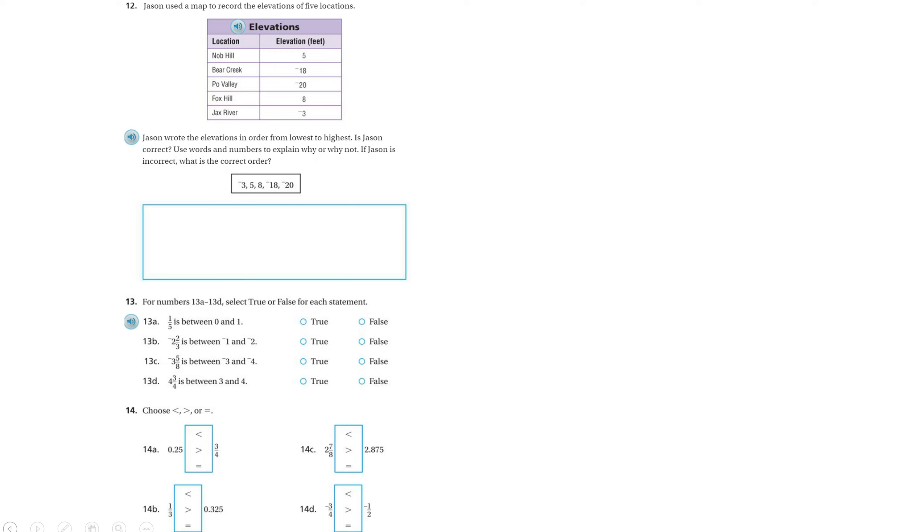All right, now we're going to look at 12, 13, 14 on the Chapter 3 test review. Jason used a map to record the elevations of five locations. Here's that map here. Jason wrote the elevations in order from lowest to highest.